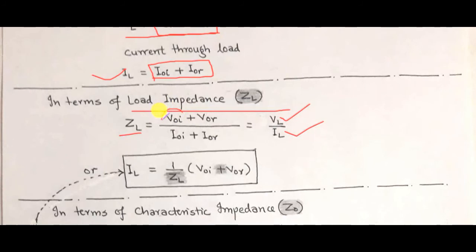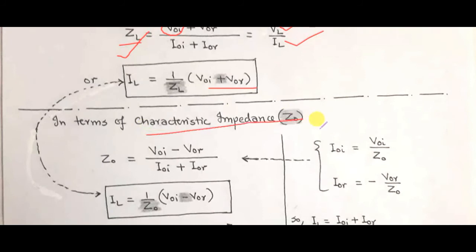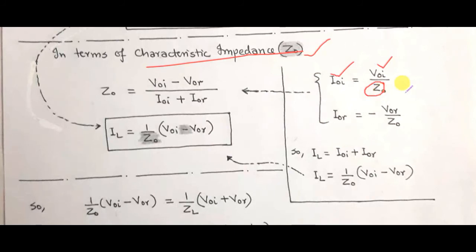In terms of load current, I_L equals (1/Z_L) times (V_naught_I + V_naught_R). The characteristic impedance Z0 is the ratio of voltage amplitude to current amplitude, so the incident current amplitude equals V_naught_I divided by Z0. In a transmission line, the incident current amplitude is of positive polarity while the reflected current amplitude is of negative polarity.